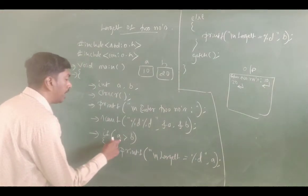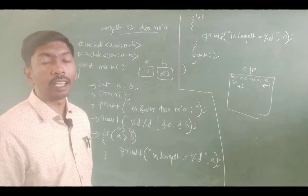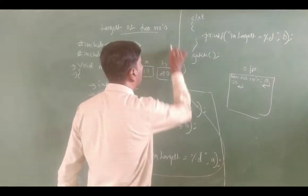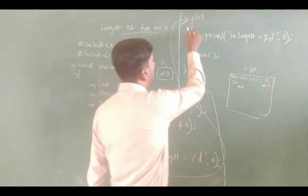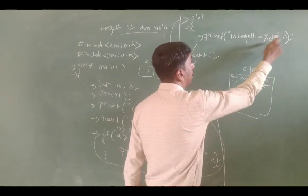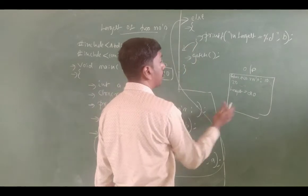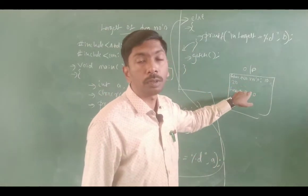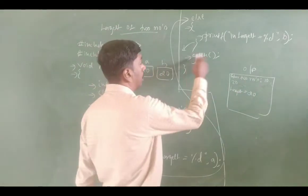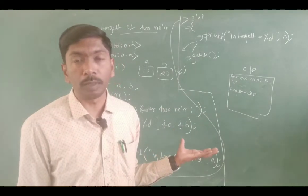Next we check: if A is greater than B. A is 10, B is 20. Is 10 greater than 20? No — condition is false. Control immediately moves to the else block. By default, B is the largest. So printf prints 'Largest = %d', B — that is 20. The final output displays 'Largest = 20'. After getch, program exits. This is the if-else statement — largest of two numbers program.